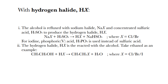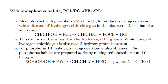Taking ethanol as an example: ethanol plus HX gives CH3CH2X plus H2O. With phosphorus halide — PCl5, PCl3, PBr3, or PI3 — alcohols react with phosphorus pentachloride to produce a halogenoalkane. White fumes of hydrogen chloride gas are also observed. Ethanol plus PCl5 gives chloroethane, POCl3, and HCl. This can be used as a test for the hydroxy group: white fumes of hydrogen chloride gas are observed if a hydroxy group is present.